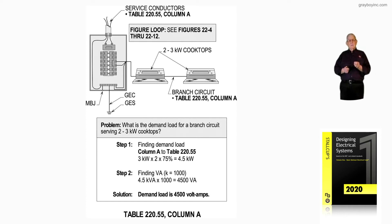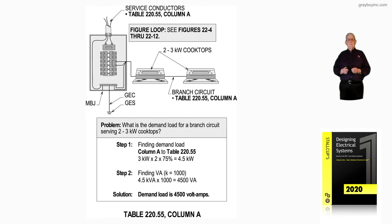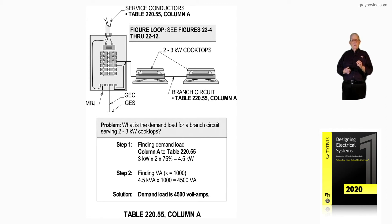You'd find diversity in the McGraw-Hill Electrical Engineering Handbook — those engineering handbooks would have that. In Step 1, we take the 3KW of each unit times 2 units, and from Column A, based upon these two units with their KW rating, we get a 75% demand. So instead of 6KW, we have 4.5KW for the service and for the branch circuit.